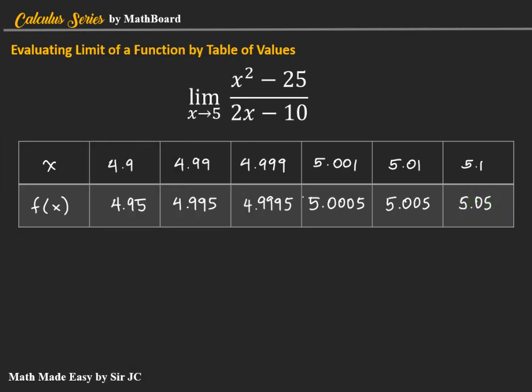So look at the table. As x gets closer and closer to 5 from the left, what do you notice on f of x? Same is true with the right. As x gets closer and closer to 5 from the right, what happens to f of x? As you can see from the left, it is approaching to 5 because it is 4.9995. Same is true with this one, 5.0005.